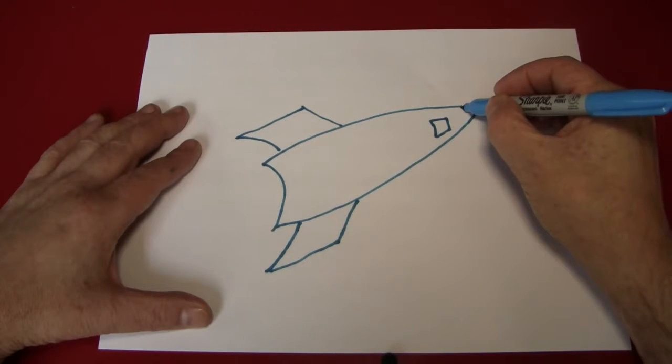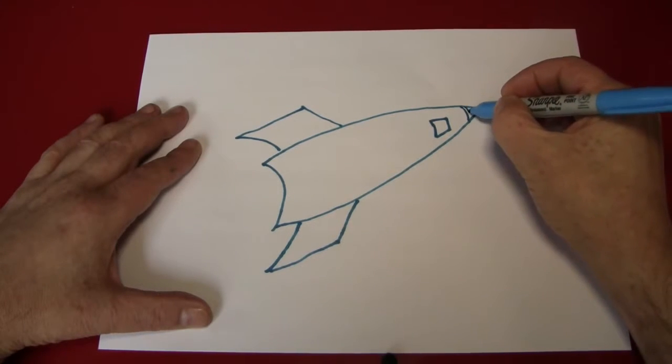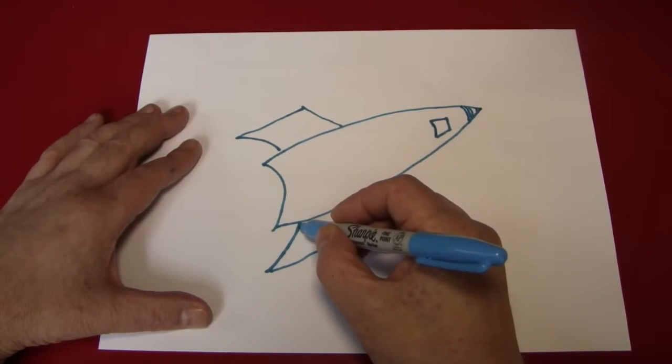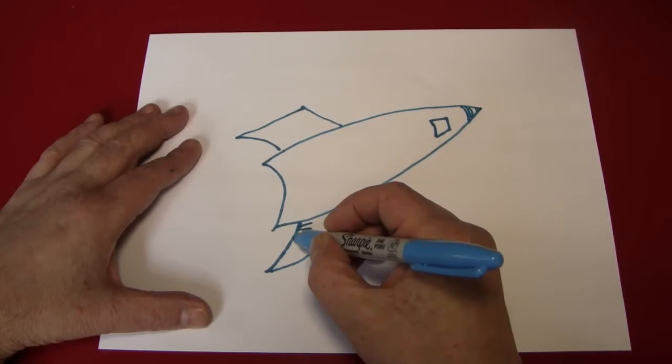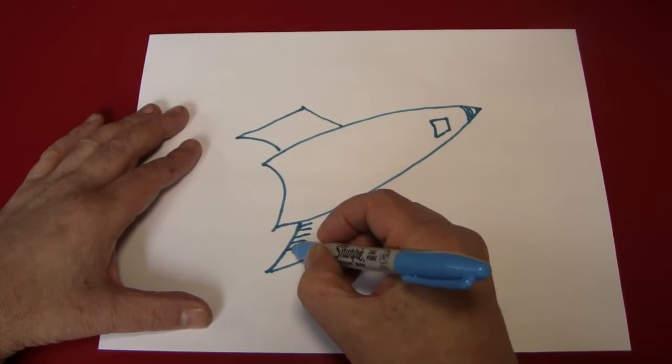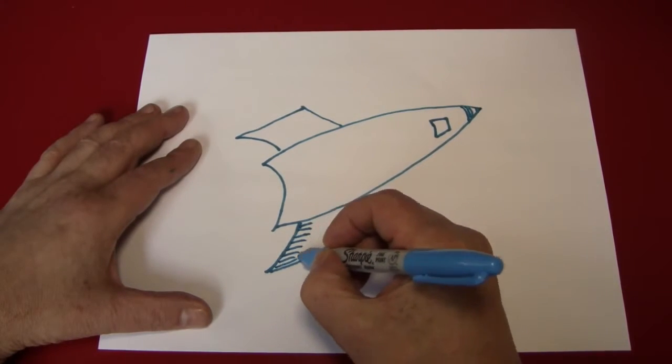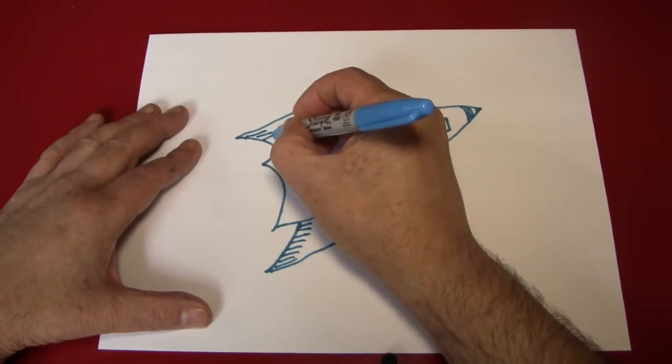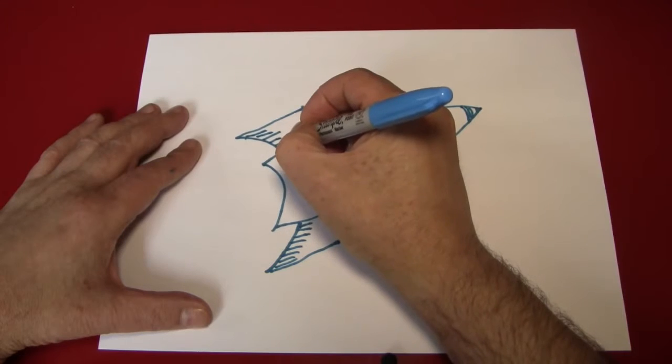Next, we can kind of color in the nose cone a little bit and put some little hash mark details right here on the rudders. I think that looks rather smart.